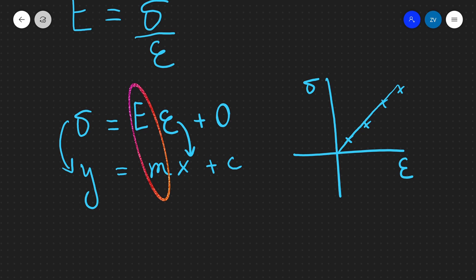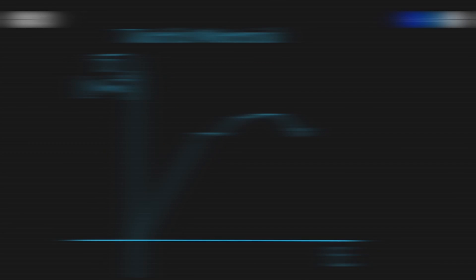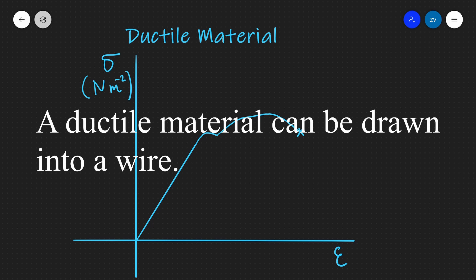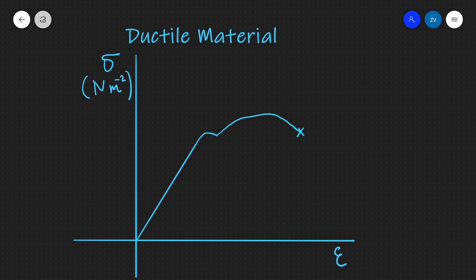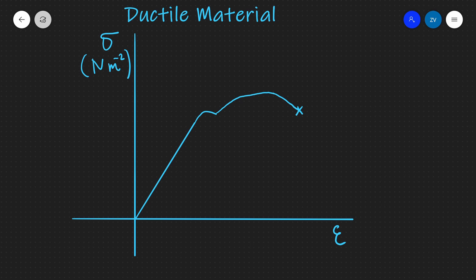Now let's look at the stress against strain graph for a ductile material. A ductile material is any material that can be stretched into wires when a tensile force is applied. For example, a piece of metal can be stretched and turned into a wire. In practice, this graph represents a metal wire being stretched by applying a certain stress.